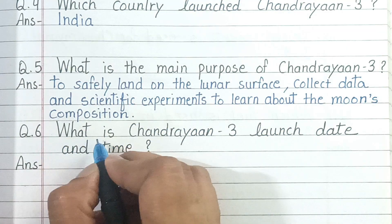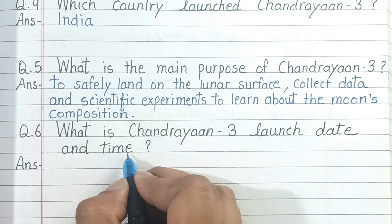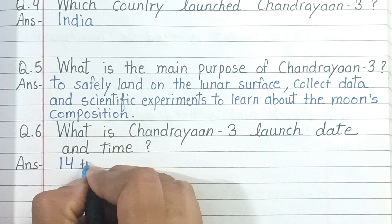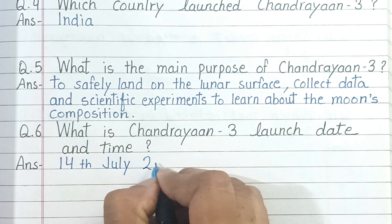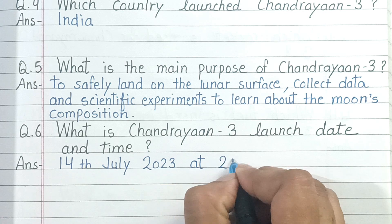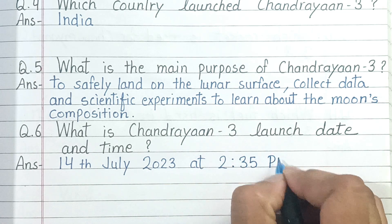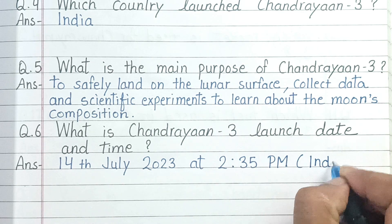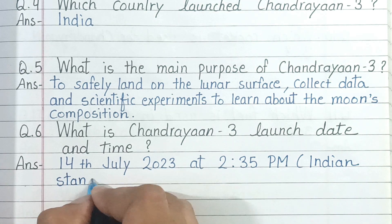Question number 6. What is Chandrayaan 3's launch date and time? And the answer is 14th July 2023 at 2:35 p.m. Indian Standard Time.